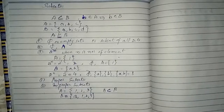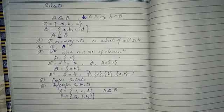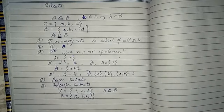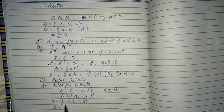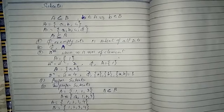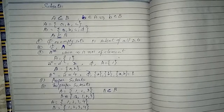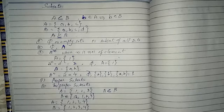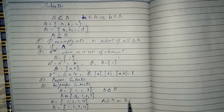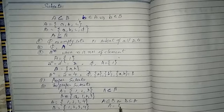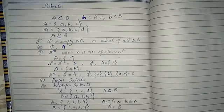If A is a subset of B but not a proper subset, then it is an improper subset of B. Improper subset means both sets contain the same number of elements. For example, if A = {1, 2, 3, 4} and B = {1, 2, 3, 4}, then A and B are subsets of each other — they are improper subsets of each other, which also means A equals B. All equal sets are improper subsets of each other.